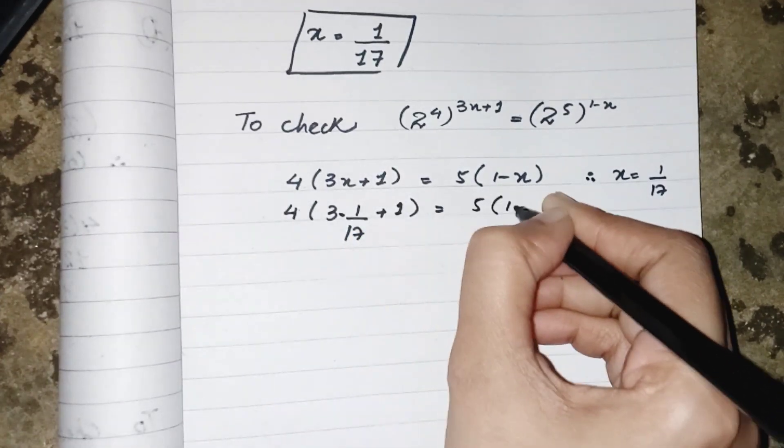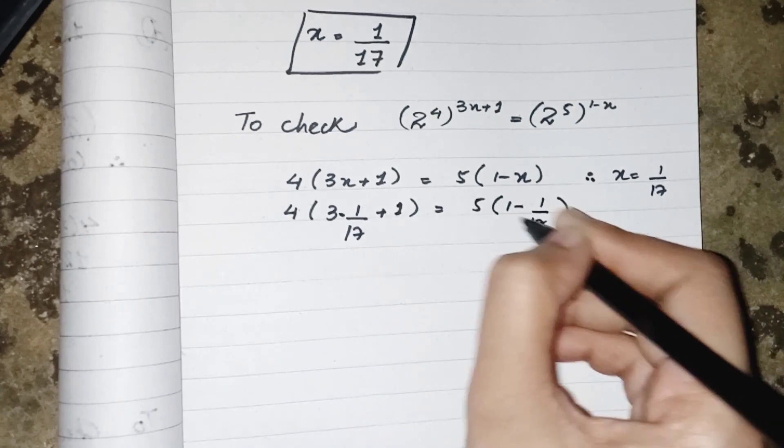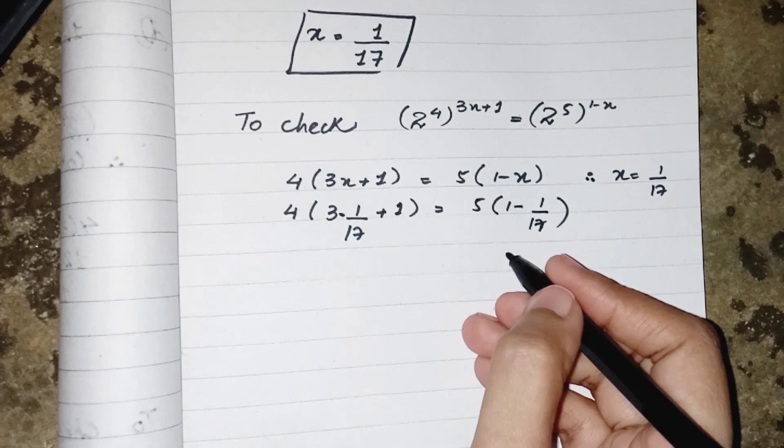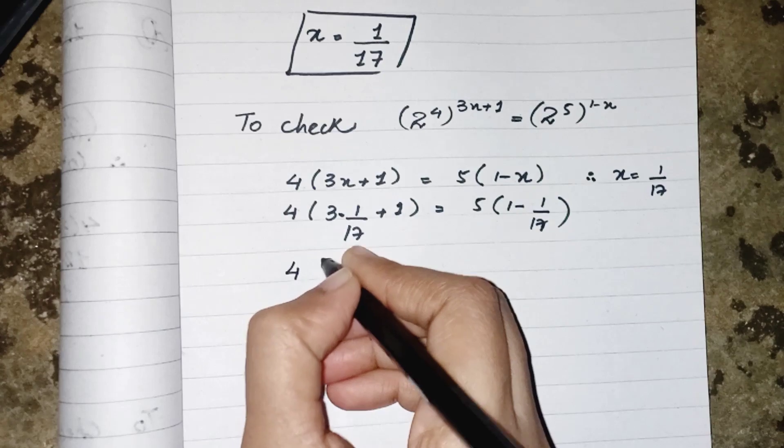Wherever we have fractions that are added or subtracted by any other fraction or number, we have to take LCM over there. So the LCM should be 17.